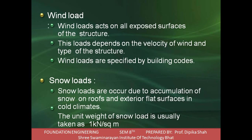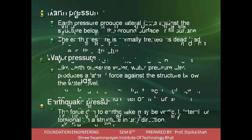Wind loads act on the exposed surface of a structure and depend on the velocity of wind - if velocity is high, wind load will also be more. Wind load also depends on the type of structure. Wind loads are specified by building codes and can be found based on location. Snow loads occur due to accumulation of snow on a roof and exterior flat surfaces in cold climates - they would not be calculated in hot climate countries. The unit weight of a snow load is usually taken as 1 kilo-Newton per square meter.